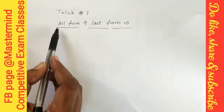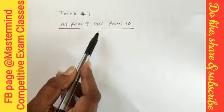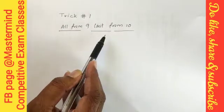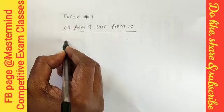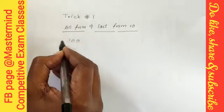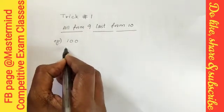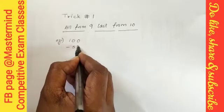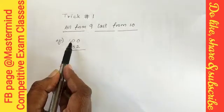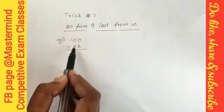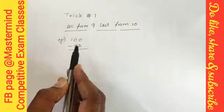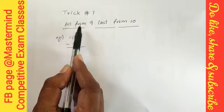In this, I am going to explain about all from nine last from ten. So what is it about? It's a very easy trick. Now let's look at this example: 100 minus 52. In school we do this with carry, borrow, and everything, but here we are going to do all from nine last from ten.